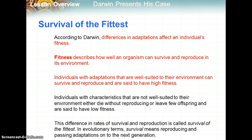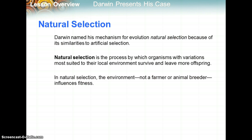In evolutionary terms, survival means reproducing and passing adaptations onto the next generation. Darwin named his mechanism for evolution natural selection because of its similarities to artificial selection, which is done by humans selecting for desirable traits like milk production in cows. Natural selection is the process by which organisms with variations most suited to their local environment survive and leave more offspring. In natural selection, the environment — not a farmer or animal breeder — influences fitness.